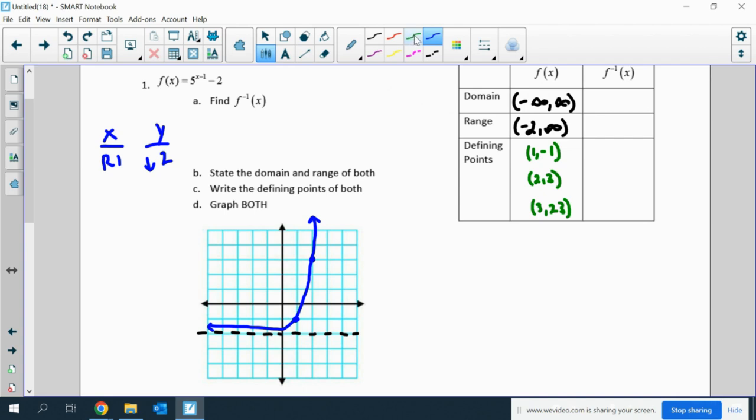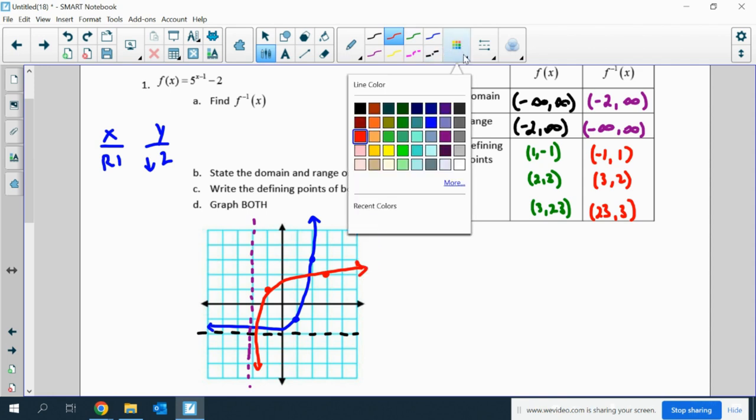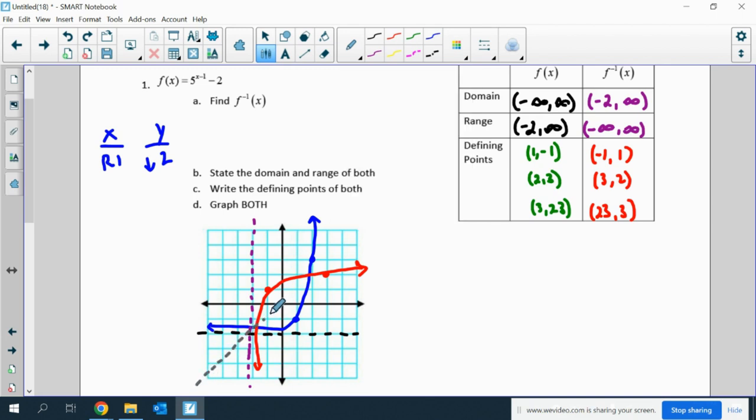Now, f inverse of x, I can graph this without really having to do any algebra. Because I know that the domain and range are just going to flip, because all x values and y values just change. So the range is going to be negative infinity to infinity. Domain will be negative 2 to infinity. So I'm going to have a vertical asymptote at negative 2. And then my defining points will be all the x's and y's flipped. So negative 1, 1, then 3, 2, and 23, 3. So negative 1, 1, then 3, 2, and a graph that looks something like this, which, as we know by now, if I drew the line y equals x, it should look like the red and blue graphs flip over that.